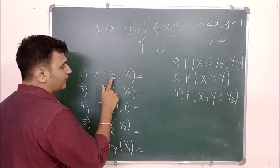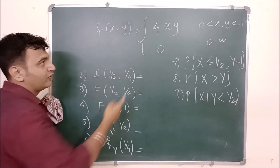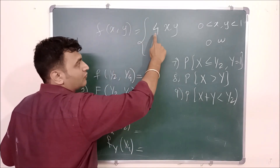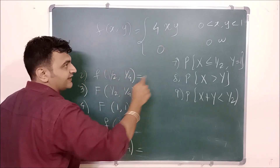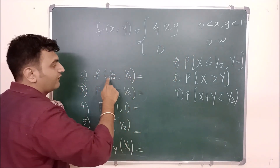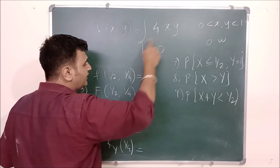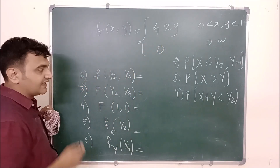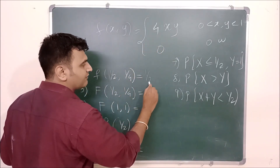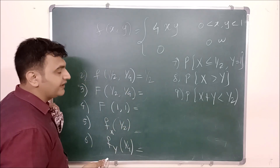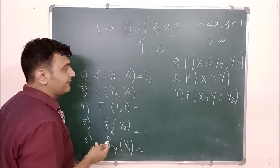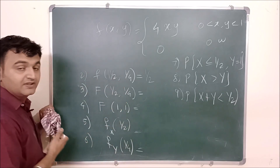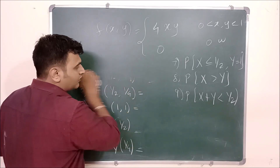Next, what is f(1/2, 1/4)? Since this point is inside the square, we evaluate f(1/2, 1/4) = 4 × (1/2) × (1/4) = 4 × 1/8 = 1/2. So the answer is 1/2.